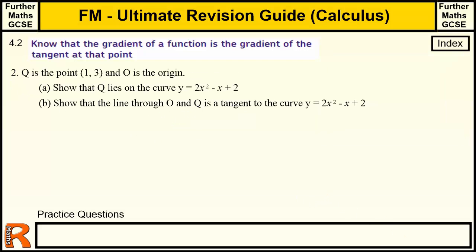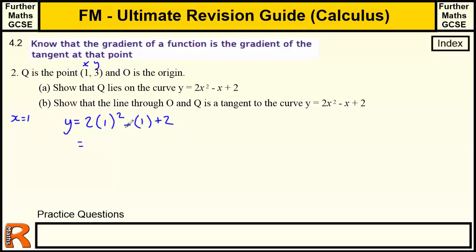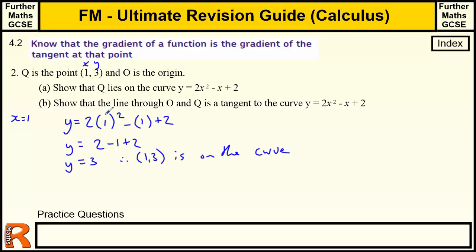Question two. Q is the point (1, 3) and O is the origin. Show that Q lies on the curve y equals 2x squared minus x plus 2. To show that a point lies on the curve, all you need to do is put the values in — this is x, this is y. When x equals 1, we get two lots of 1 squared minus 1 plus 2, which gives us 2 minus 1 plus 2, which equals 3. So when x equals 1, y equals 3, therefore (1, 3) is on the curve.